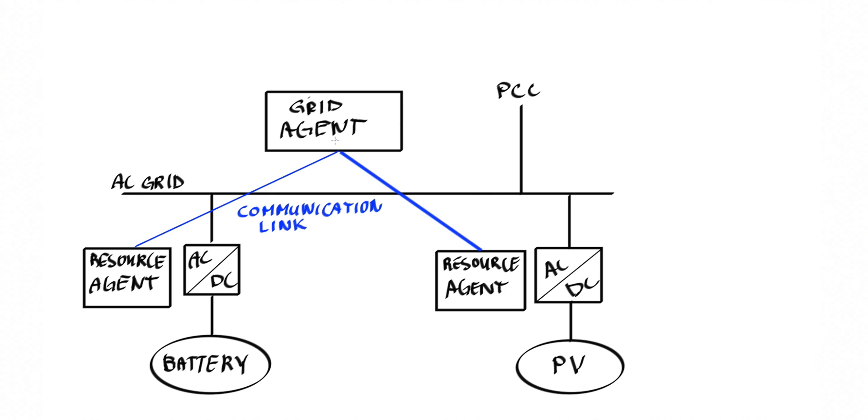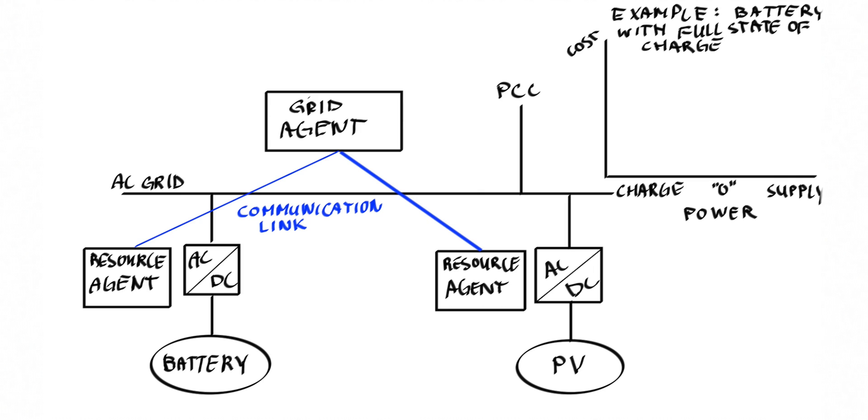Roughly speaking, the device-independent message format is used to inform the grid agent about the preferences of a resource and uncertainties in its operation. In particular, such preferences are expressed by means of a cost function, which can also be viewed as a proxy to the internal state of the resource. For example, a battery with full state of charge can send a cost function that rewards the delivery of power.